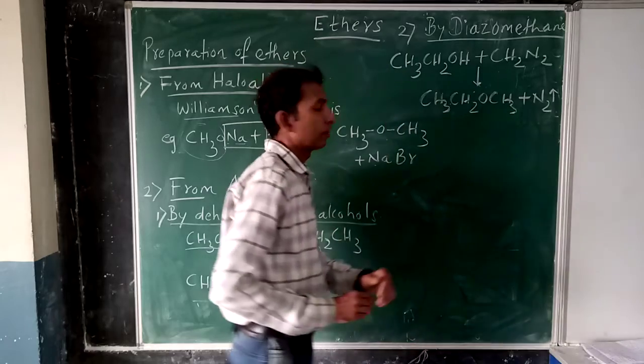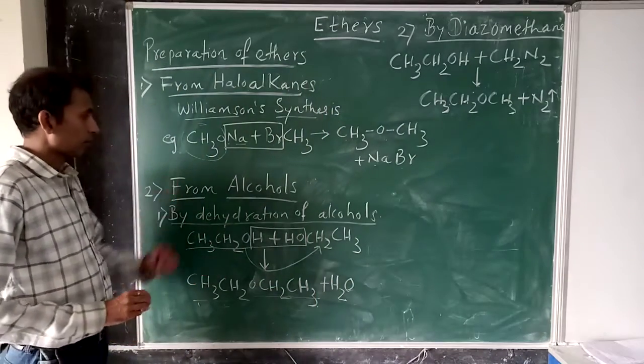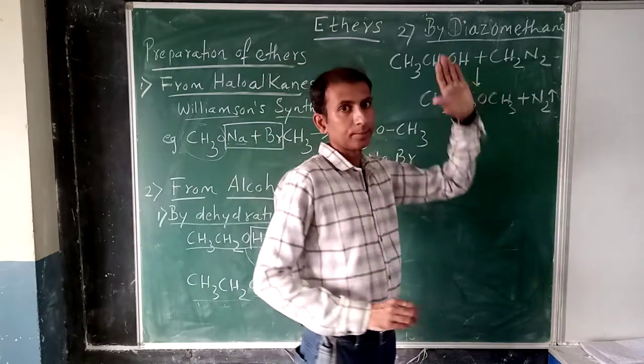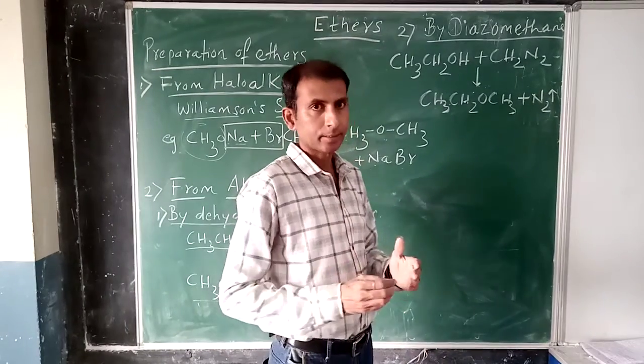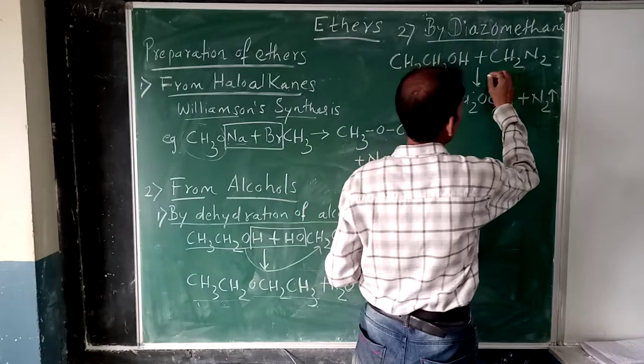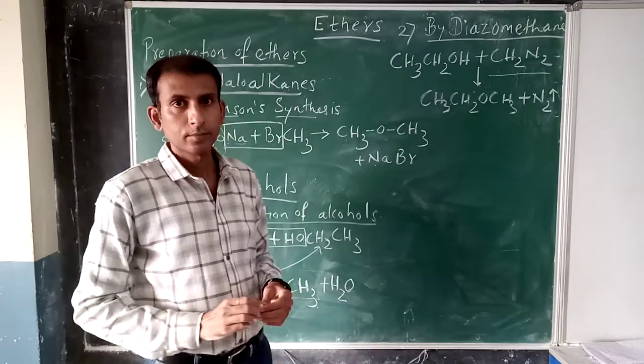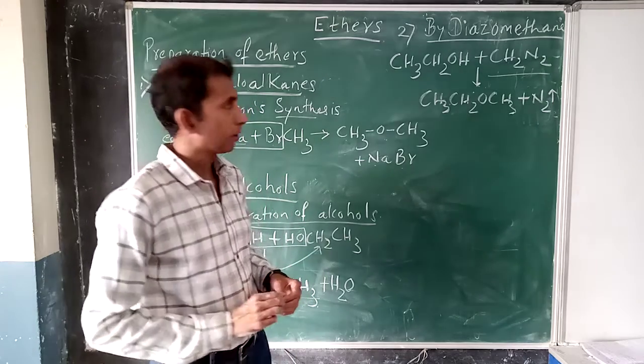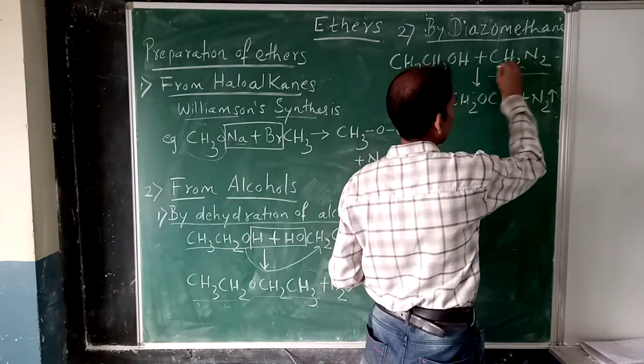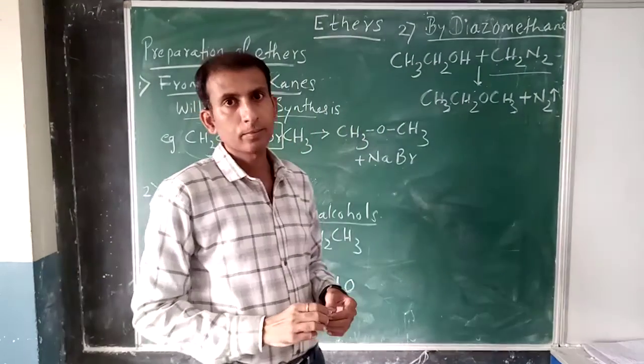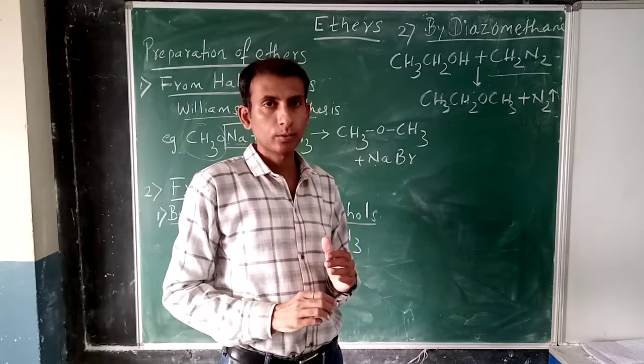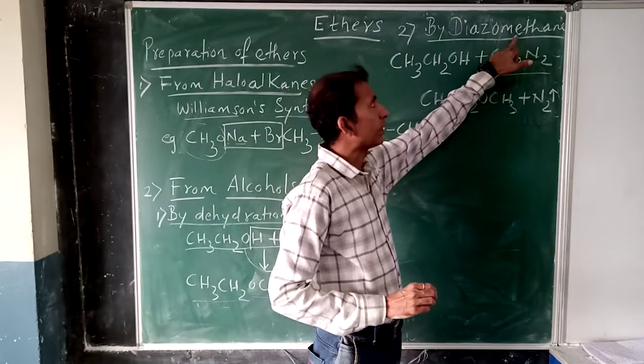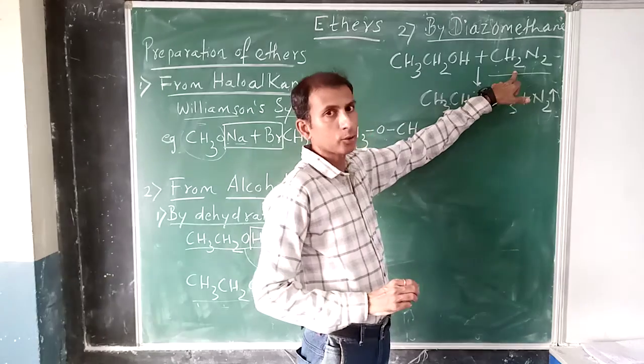Now the second method under this heading of preparation of ethers from alcohols is by diazomethane. What is diazomethane? Why is it called diazomethane? Because we have an N2 group attached to a carbon atom. The N2 group is called diazo, and one carbon means methane. So this compound is called diazomethane.